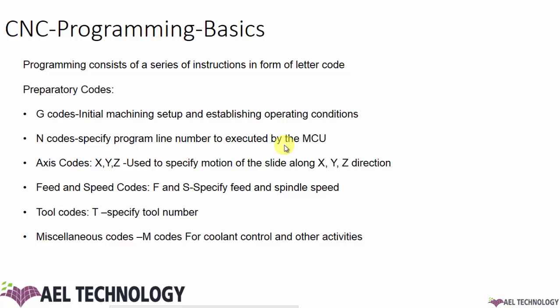All these are done with the help of some codes. G codes are proprietary codes used for initial machine setup and establishing an operating condition. N codes are programming line numbers. We have axis codes like X, Y, and Z that represent the coordinates. Then we have feed rate codes, spindle speed codes, and tool codes. We also have miscellaneous codes like spindle stop, coolant run, and program stop.